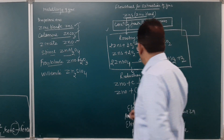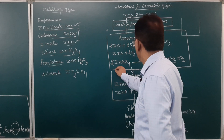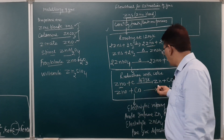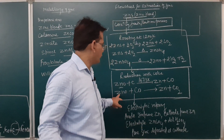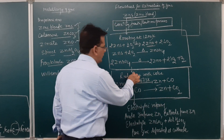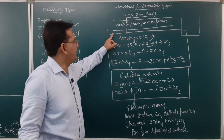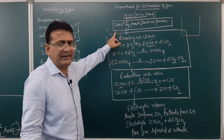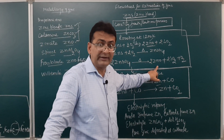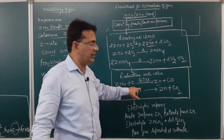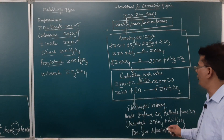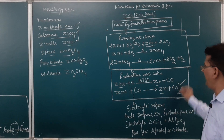The third step is reduction with coke. Zinc oxide, when reduced with carbon, gives zinc metal. Zinc oxide can also be reduced with carbon monoxide to give zinc metal and CO₂. So the three steps are: concentration by froth flotation, conversion to zinc oxide by roasting, and reduction of zinc oxide to zinc metal.